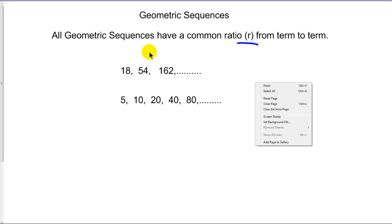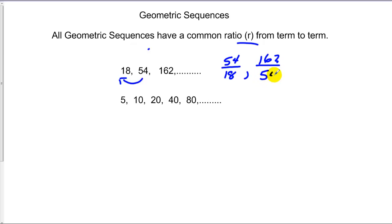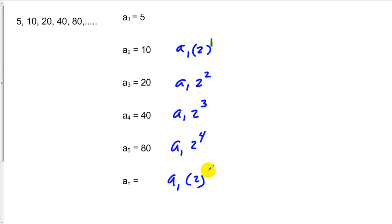Since we're talking about this being a ratio, we take a term and the term before it, like 54 and 18, and make a ratio out of that. And that should be the same in ratio to 162 over 54. If that's the case, we know that to be geometric. So in each of these cases, we know we have a ratio of 3.